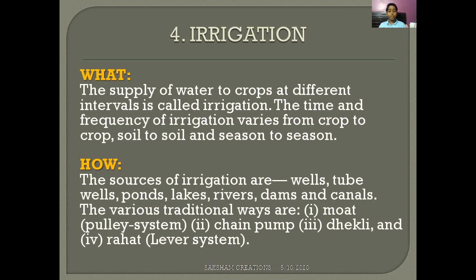The next process is irrigation. What is irrigation? The supply of water to crops at different intervals is called irrigation. The time and frequency of irrigation varies from crop to crop, soil to soil, and season to season. The sources of irrigation include wells, tube wells, ponds, lakes, rivers, dams, and canals.